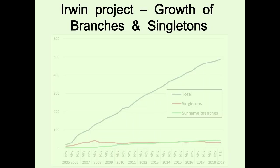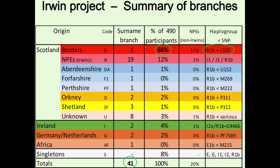The project has grown steadily over the years. The number of branches started at zero and increased fairly steeply, then flattened out. The number of people I couldn't put into branches started at about 50% and is now less than 10%, so nearly everybody can be placed into a branch, and most branches can be identified geographically.